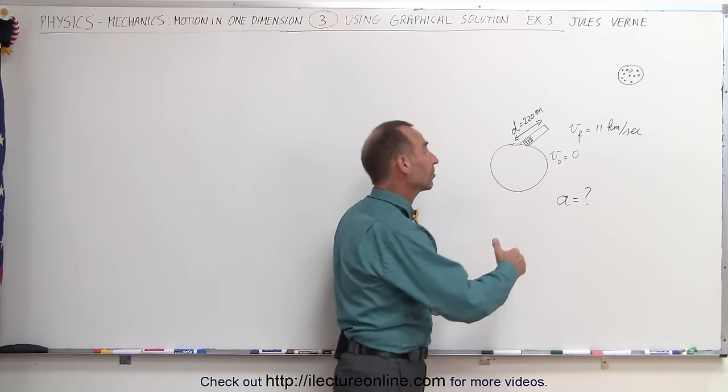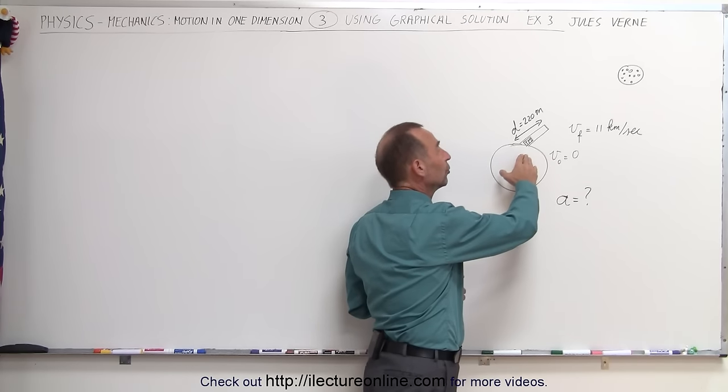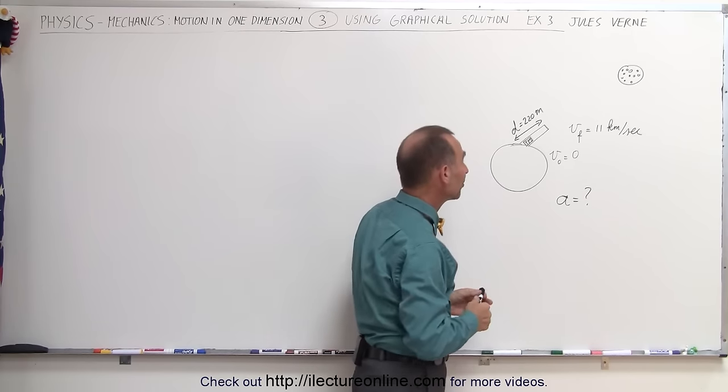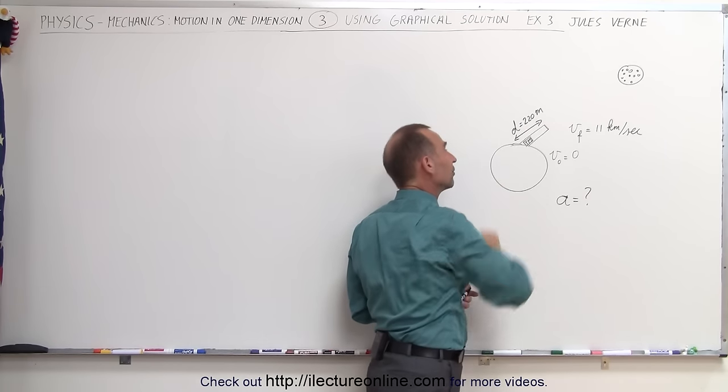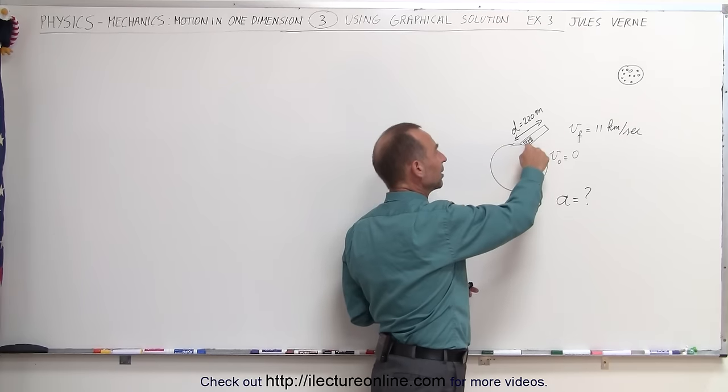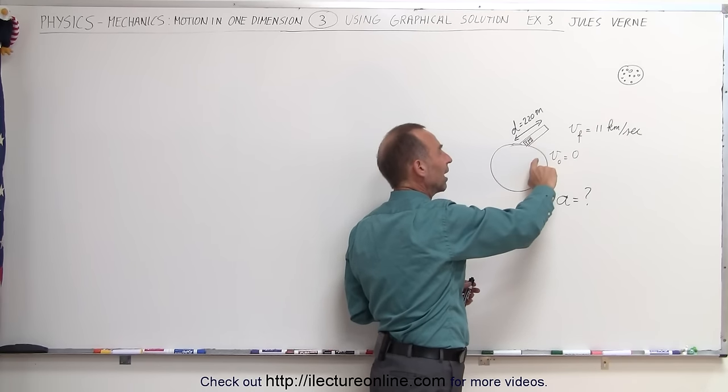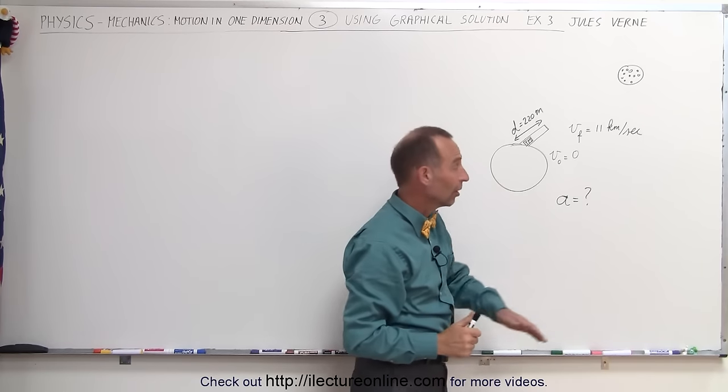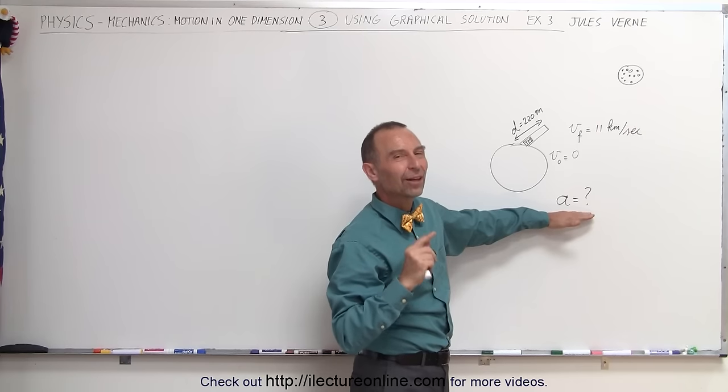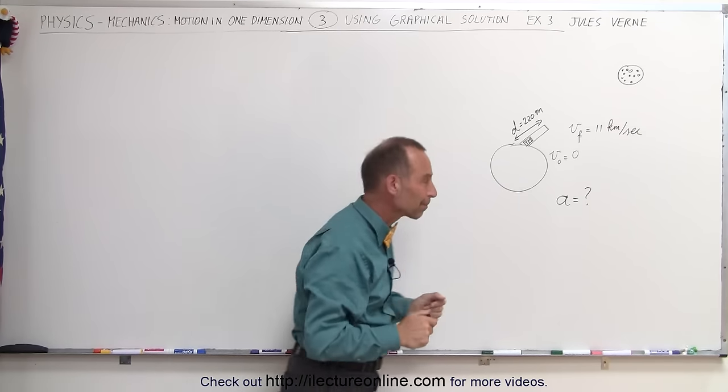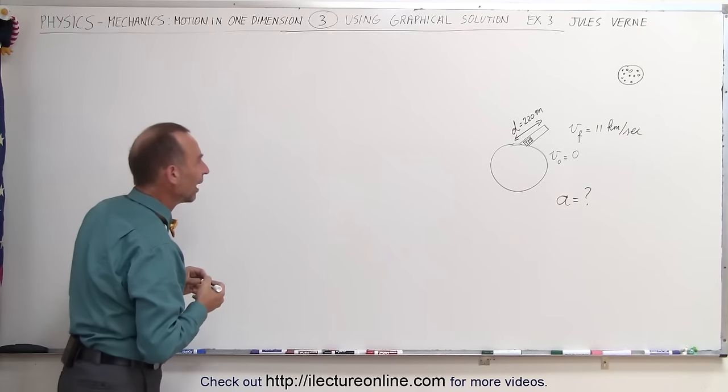That would require an acceleration from zero to 11 kilometers per second (11,000 meters per second) over the length of the cannon. Let's say the cannon was 220 meters long. People in the capsule would have to reach that speed over that distance. The question is, what was their acceleration, and was that even realistic?